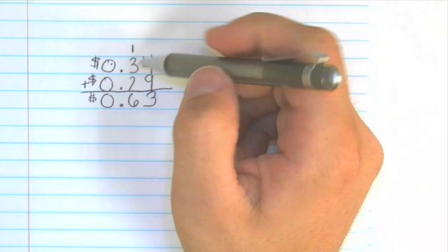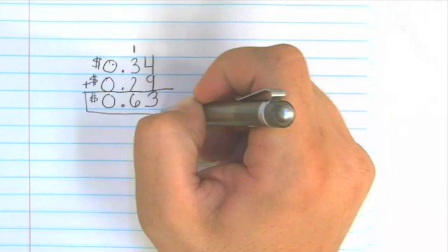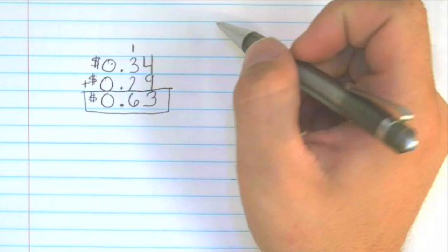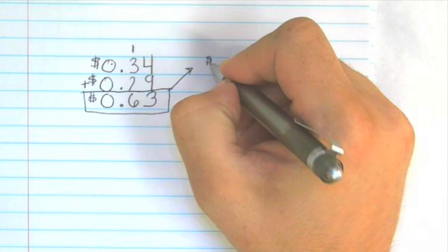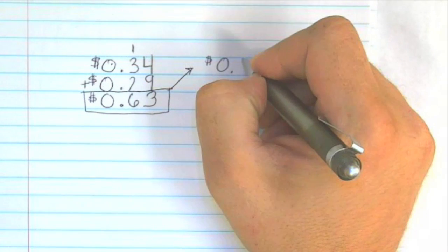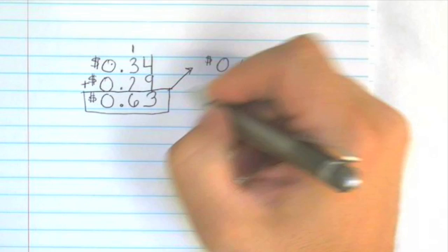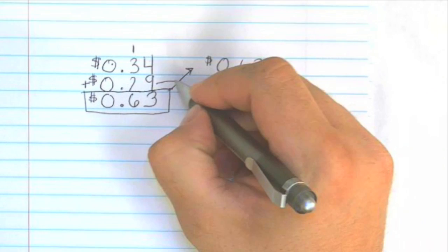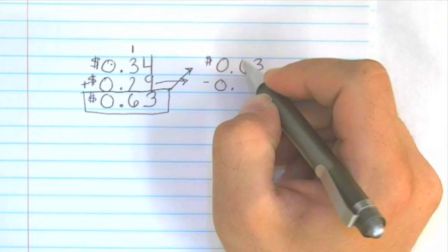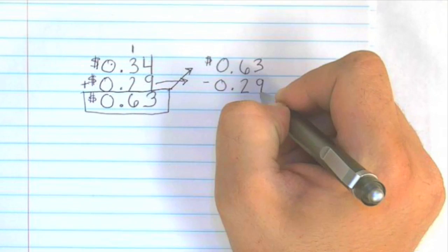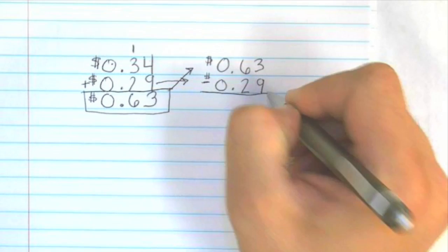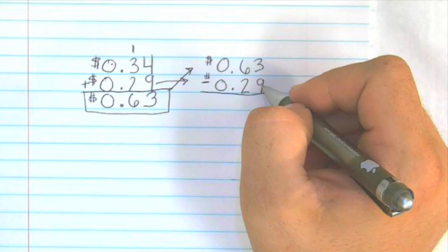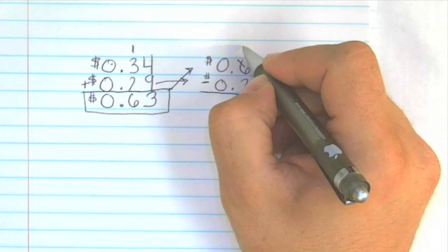So we have 63 cents as the sum. So let's use the inverse operation to check that. Again, I'm making sure that I write neatly this answer, and I'm going to subtract 29 cents.